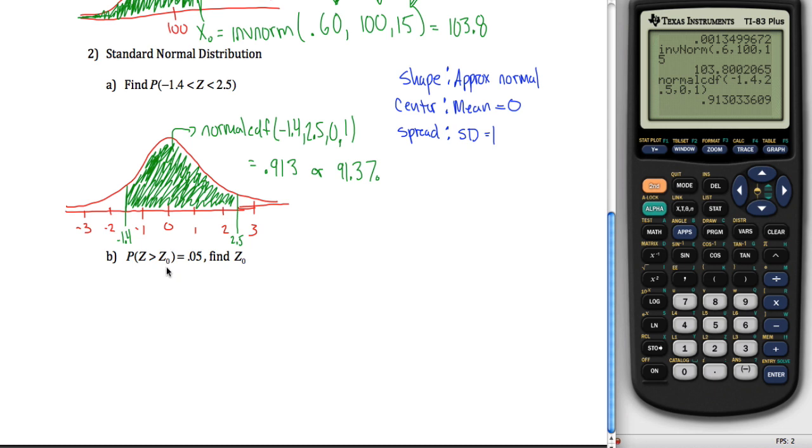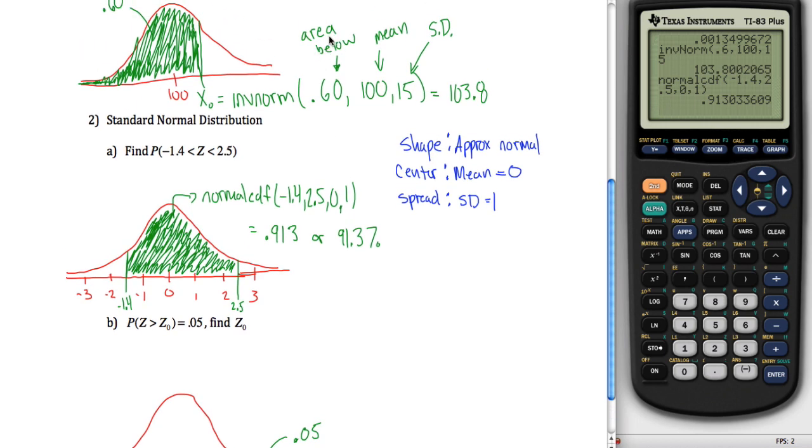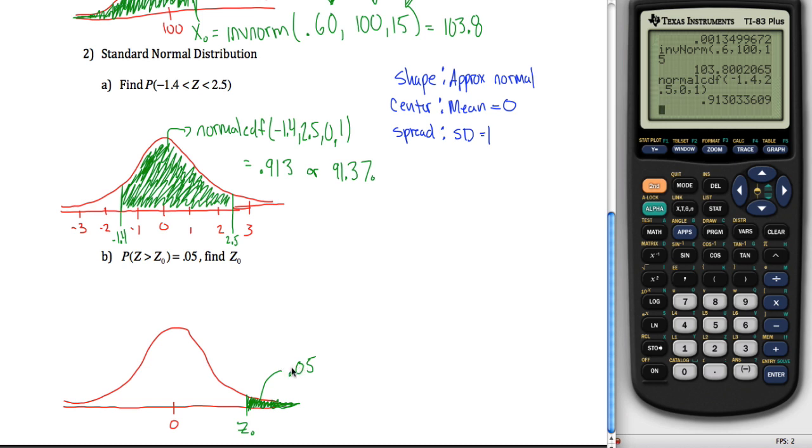Finally, the probability that Z is greater than Z naught is equal to 5%. If you drew your picture, you got your zeros in the middle. There's some value way out here to the right, so that only 5% of the data is above it. This shaded region is only 5%, equal to 0.05. We're going to use our inverse normal function again. However, inverse normal needs the area below the point in question. In this case, we're given the area above. So we have to figure out the area below. If 5% is above, 95% is below.